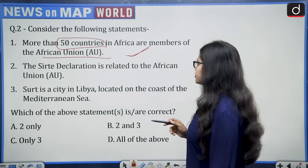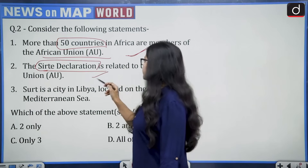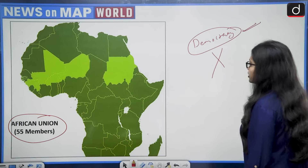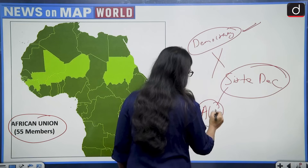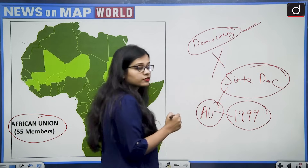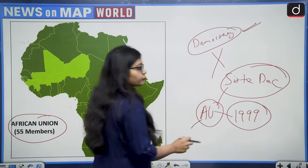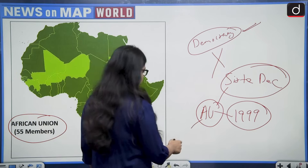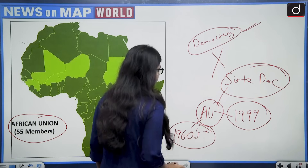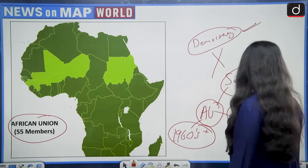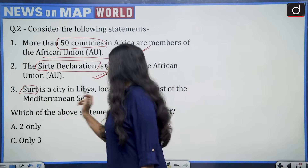Second statement says the Sirte Declaration is related to the African Union — this is correct. The Sirte Declaration is the declaration through which the African Union was formed in the year 1999. Before that, there was another organization called the African Unity Organization, which was in place since the 1960s. So statement two is also correct.